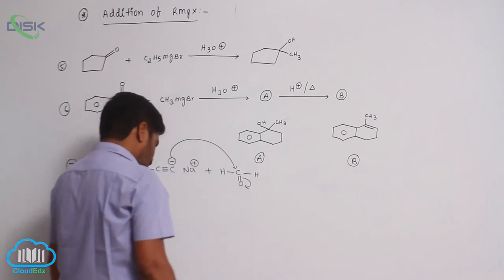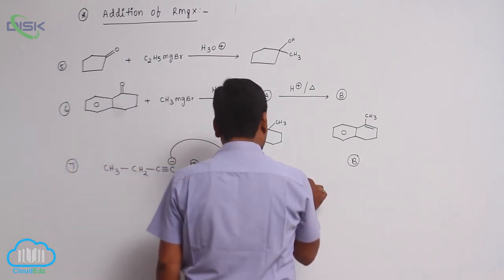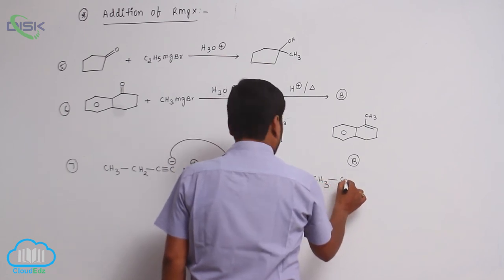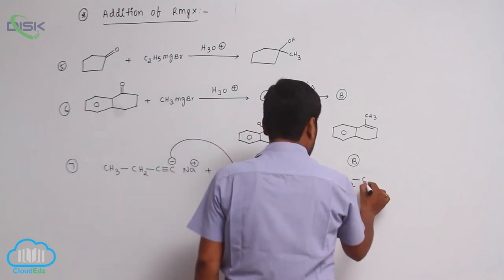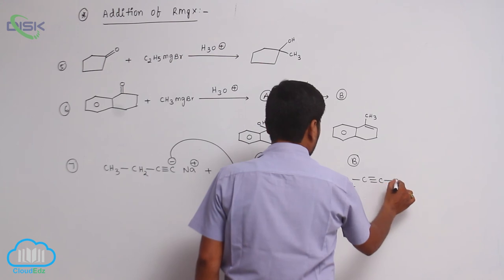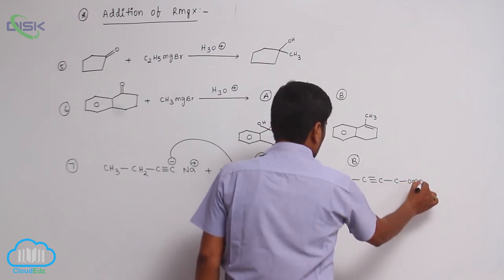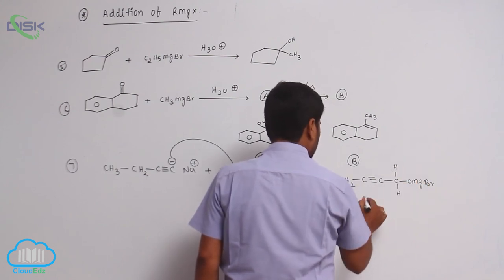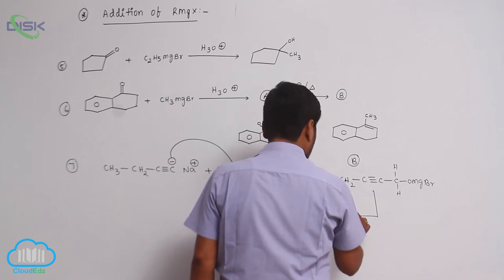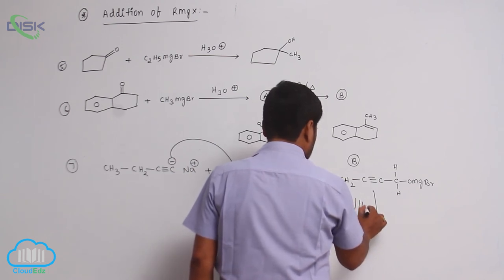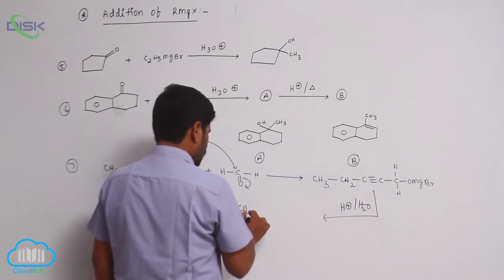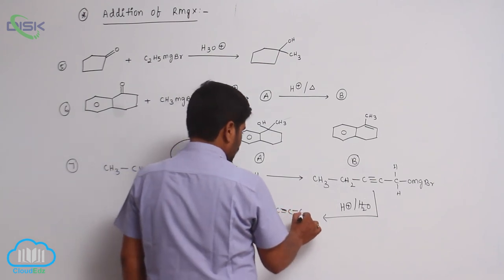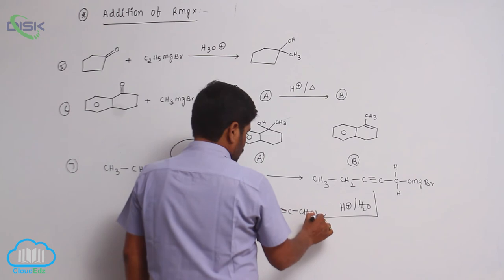The sodium acetylide reacts with formaldehyde. The intermediate has OMgBr, then hydrolysis gives CH2OH with a C≡C bond — that is, HC≡C-CH2OH (propargyl alcohol type product).